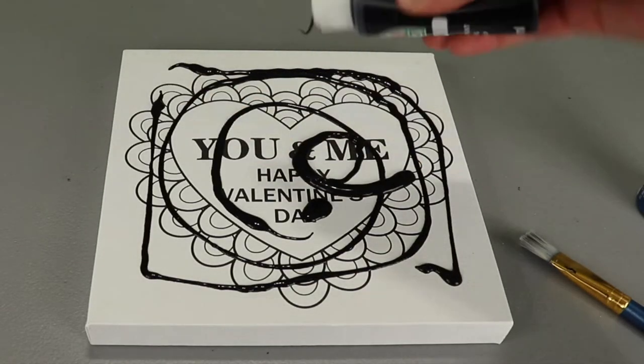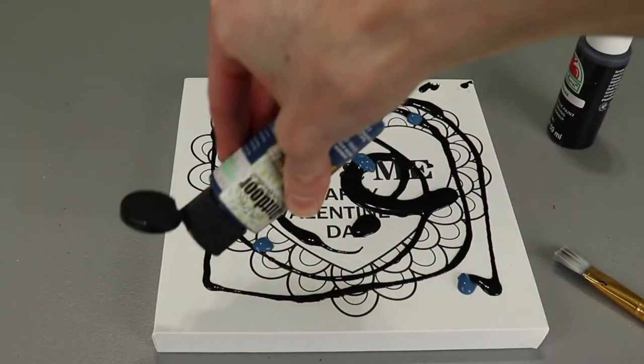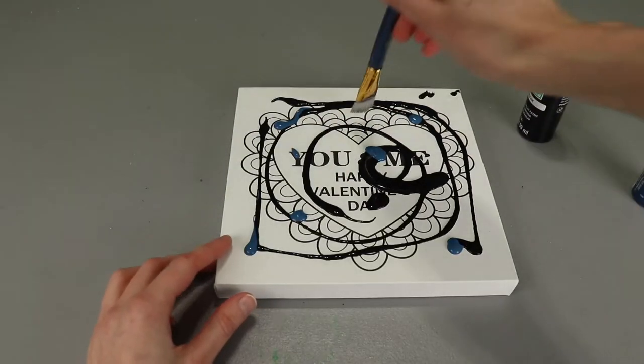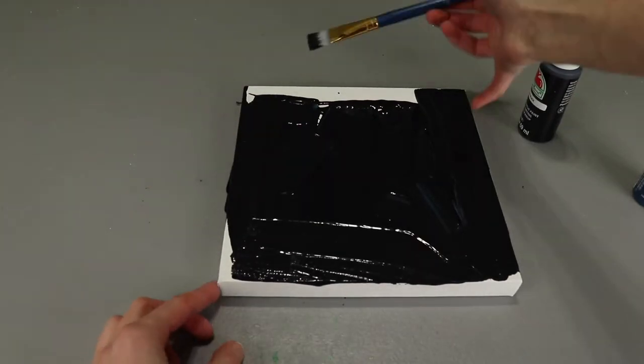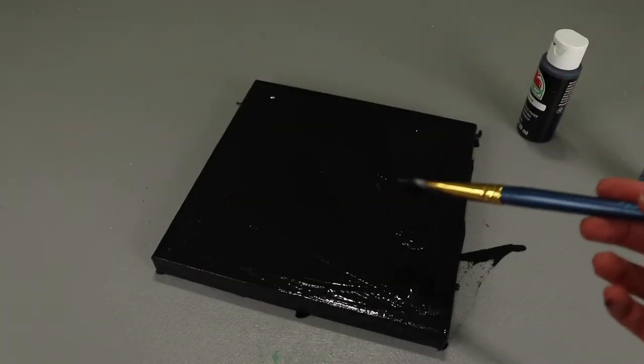I also added a little of this random blue paint but it didn't show up much. I tend to not be neat when I paint so I just squeezed some paint onto my canvas and went at it with a paintbrush. I also painted the edges of my canvas for a more finished look.